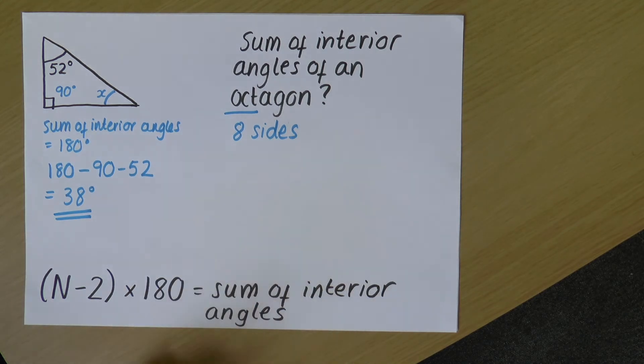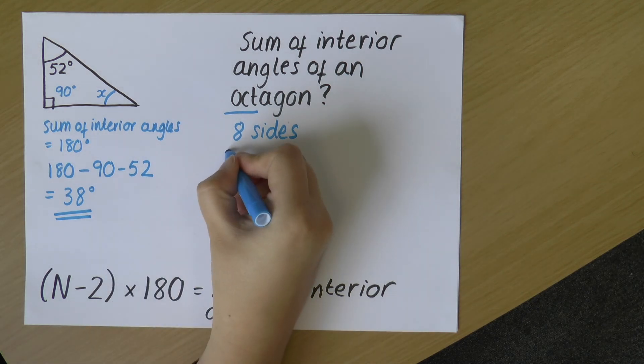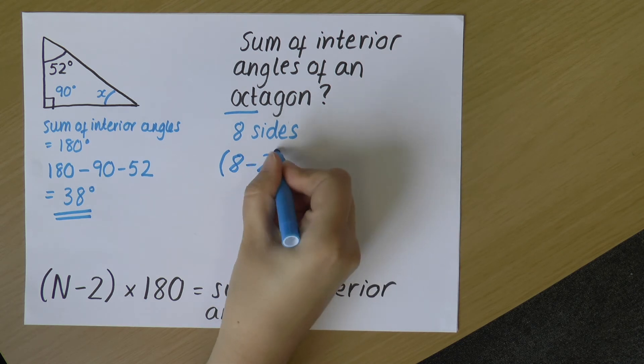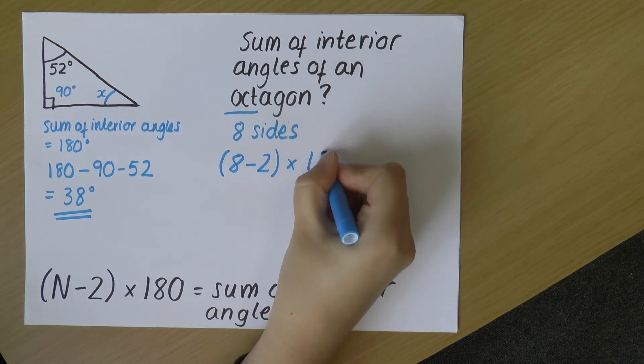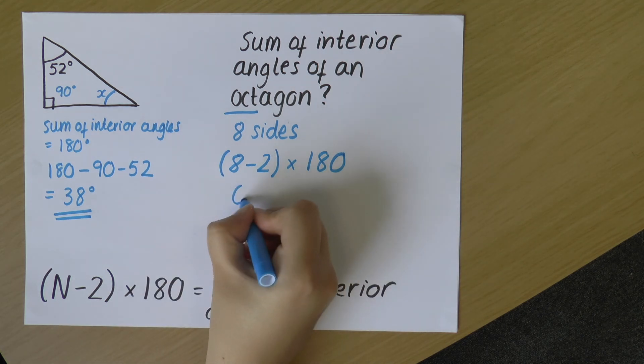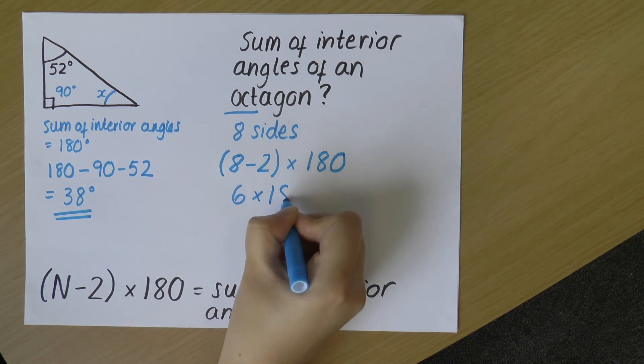Now that I know how many sides an octagon has, I can use this equation down here. So (N-2) times 180, where N is the number of sides. So that's why it's useful for me to know how many sides an octagon has. So let's do this. So N is the number of sides. That's eight minus two times 180. So eight minus two is six. Six times 180.